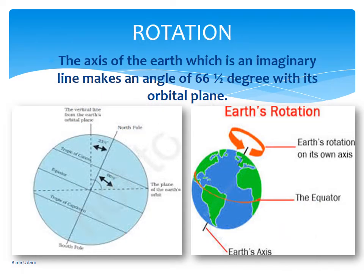The spinning of the earth is called rotation. It takes the earth about 24 hours, or one day, to make one complete rotation. At the same time, the earth is also moving around the sun — this is called revolution. To understand rotation, imagine a football player spinning a ball on his index finger. That's how rotation works: the finger is the axis and the football is the earth.